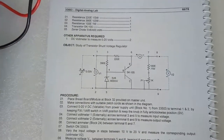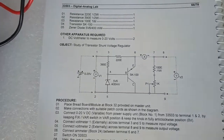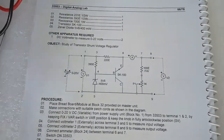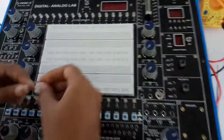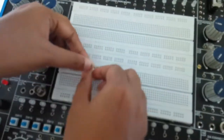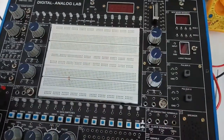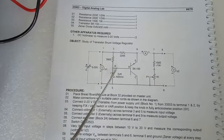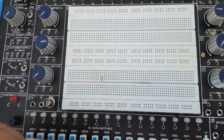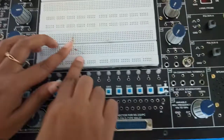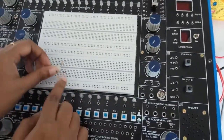The next experiment is study of transistor shunt voltage regulator. This is the circuit diagram. First connect a 390 ohm resistor to the breadboard. Then connect the Zener diode with the resistor — this is the cathode part and this is the anode part.